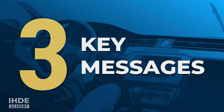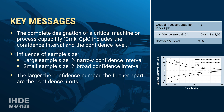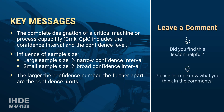That was a lot of new information, so here are the three most important key messages. The complete designation of a critical machine or process capability — CMK or CPK — includes the confidence interval and the confidence level. The larger the sample size, the narrower the confidence intervals; the smaller the sample size, the broader the confidence intervals. The larger the confidence level, the further apart the confidence limits. If you found this lesson helpful, please leave a comment. Take care and see you next time.